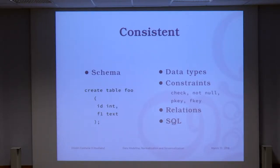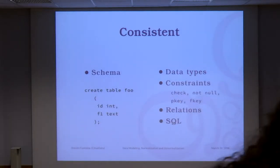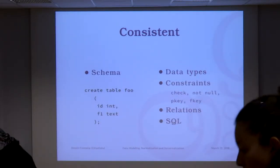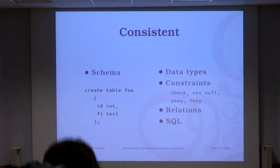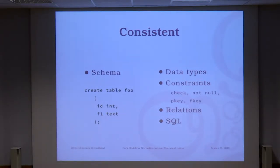Consistency means that you know what you have in your data set — you can trust your data. To know what you have, you need to have a schema. You need to declare your intention, like you do when you write code. Otherwise people have to reverse engineer every single line of code you wrote. You have a structured data model. The first consistency bits we're going to use in PostgreSQL are the data types.